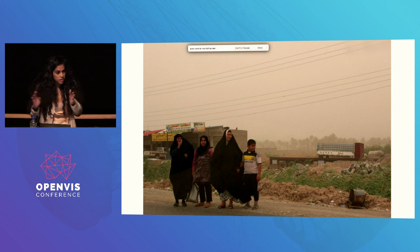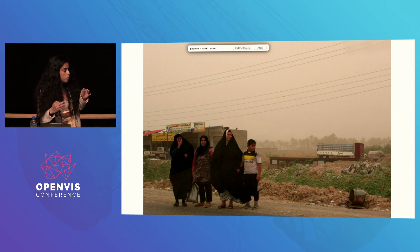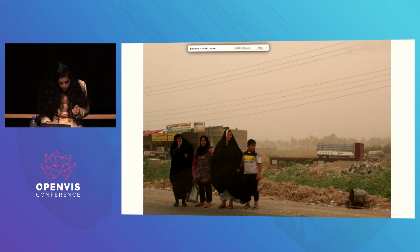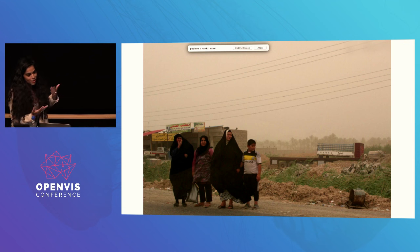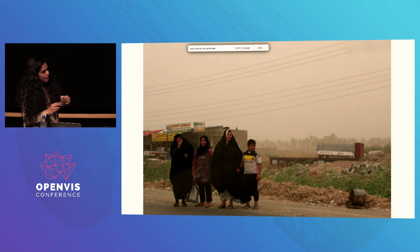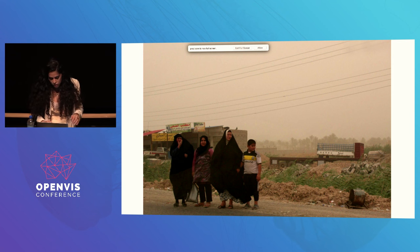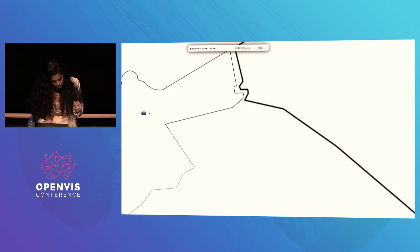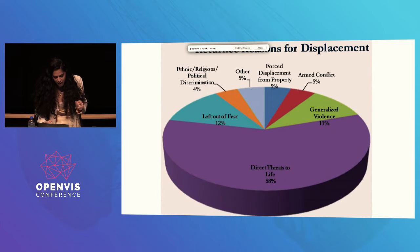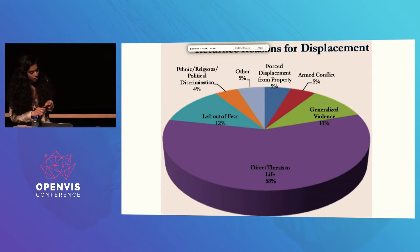Those statistics also served a second purpose: to go to donors and say, this is the money we need to provide for those Iraqis. I have a really important and slightly difficult confession to make, which is that I was really, really bad at my job. That's not me being modest at all. You can look at this chart, which proves it — I made this chart, it comes from one of the reports we published.